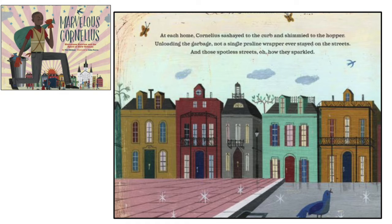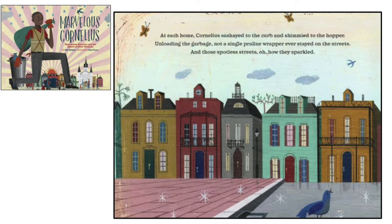We're going to use Marvelous Cornelius, Hurricane Katrina, and the Spirit of New Orleans again as one of our mentor texts. I'm going to read you this page — you can see it on the right-hand side of your screen. It says: At each home, Cornelius sashayed to the curb and shimmied to the hopper. Unloading the garbage, not a single praline wrapper ever stayed on the streets. And those spotless streets, oh how they sparkled.